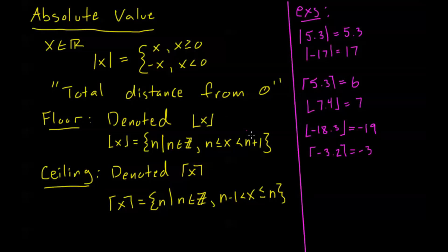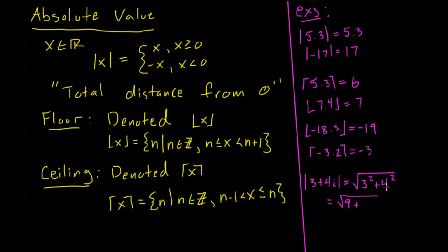Let's do one quick example of modulus with a complex number. If I'm looking at the modulus of 3 plus 4i, we derived that this is equal to the square root of a squared plus b squared. Here my a is 3 and my b is 4. So that's the square root of 3 squared plus 4 squared, which is the square root of 9 plus 16. The square root of 25 — and we define the square root of a number to be the positive root — so that's going to be 5. The modulus of 3 plus 4i is 5.